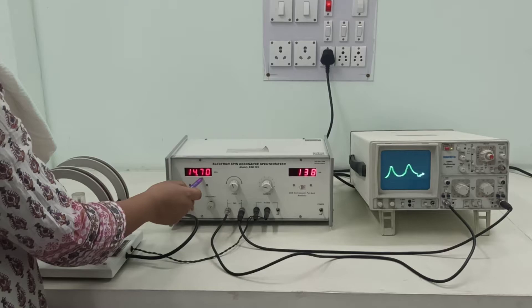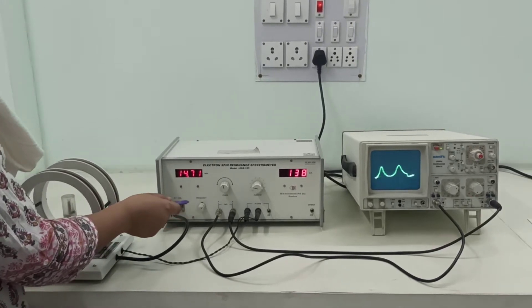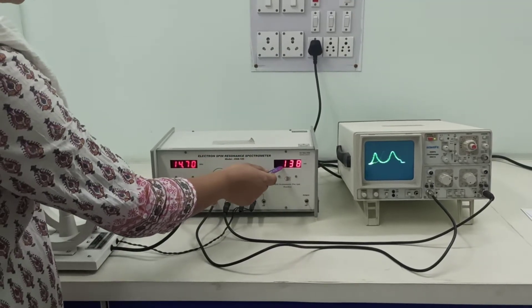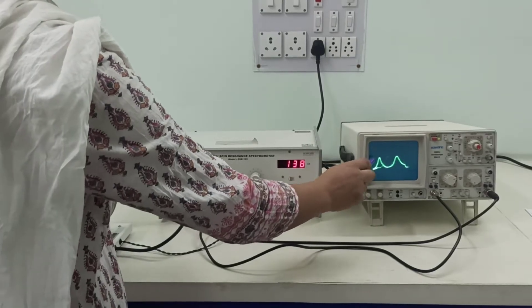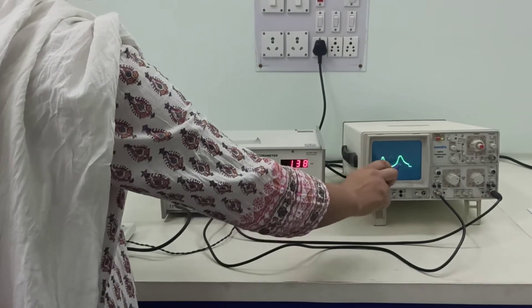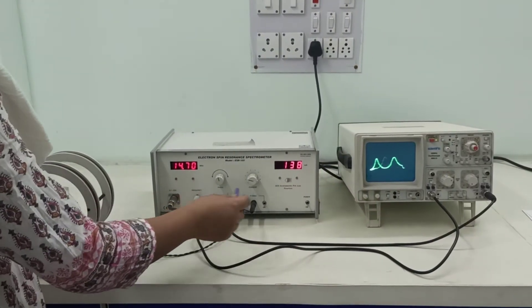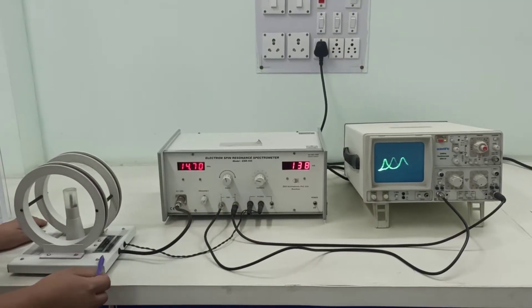This display is meant for showing your frequency and there is a frequency adjuster knob here, making use of which you can change the frequency. There is a current adjuster knob here, and there is a CRO here in which our output will be displayed. There are two wires which connect to your CRO and another two wires which connect to your Helmholtz coil.